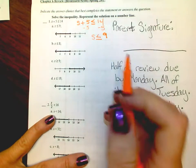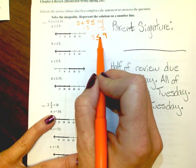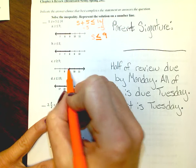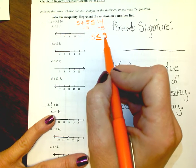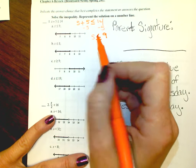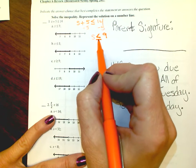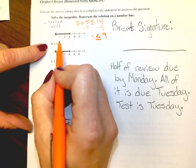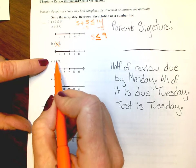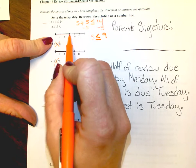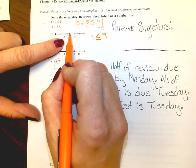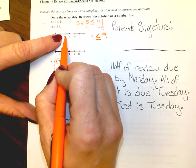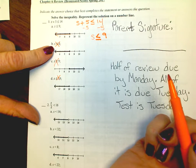Remember, when you have less than or equal to, the dots will always be colored in. Ask yourself: can s be 9? Yes, it can. So s is less than or equal to 9. Look on your number line — you color in 9, and since 8 is less than 9, the line is shaded to the left.